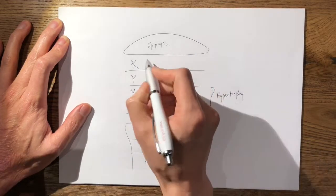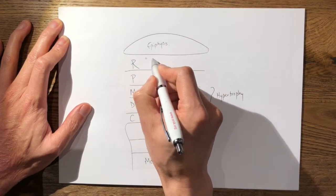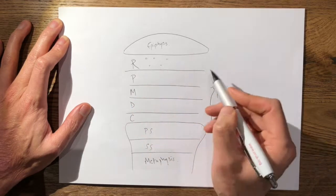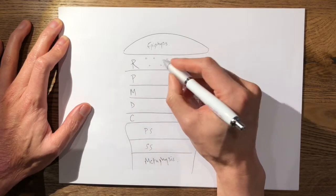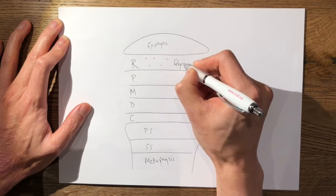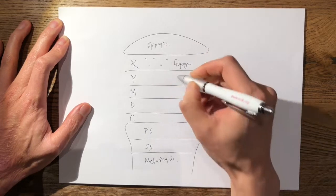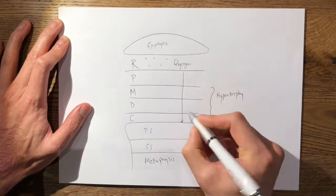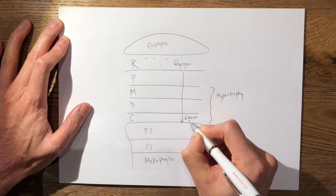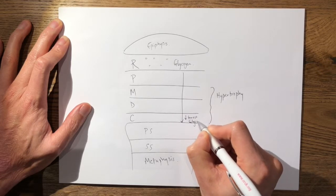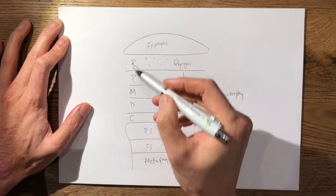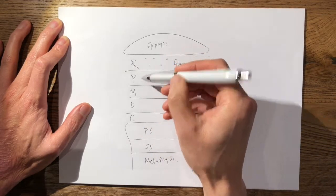So here in the reserve zone you mainly have these very small resting germinal cells not many in number. In this layer particularly you have the highest glycogen content, and as you progress down towards the metaphysis you have the lowest glycogen content, so it goes from high to low.